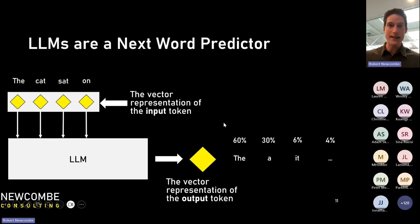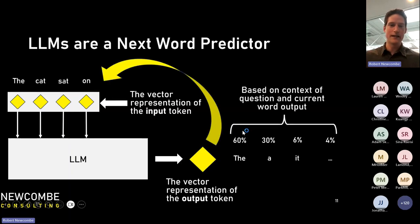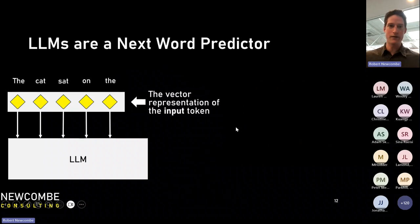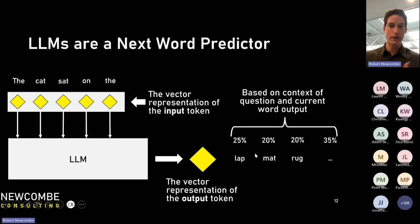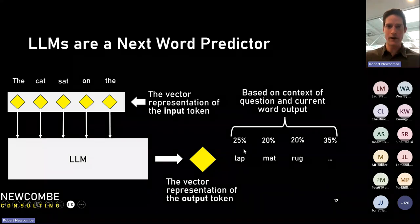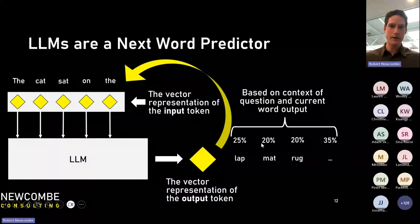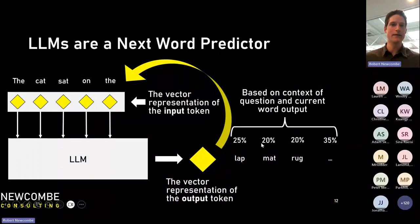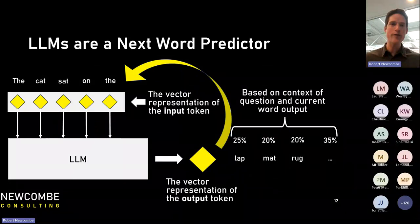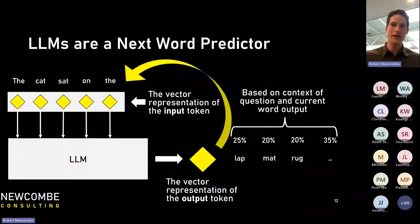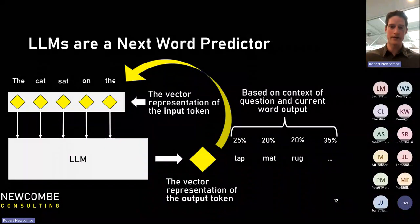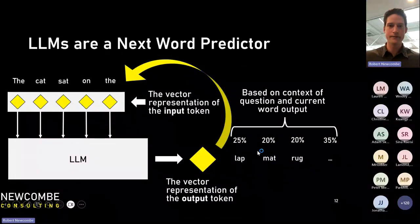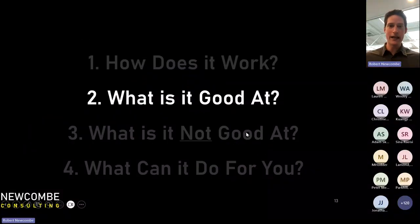Most of the time — say 60% of the time — it's going to choose 'the.' Then it feeds that back in and cycles through: given this input, what's the next best word? Could be 'lap,' could be 'mat,' could be 'rug,' and so on. It iterates through this process at lightning speed to give you a final answer. There's no thinking ahead, no planning — it's just figuring out what the next best word is based on your prompt and what it's already started to provide.